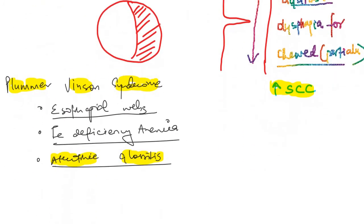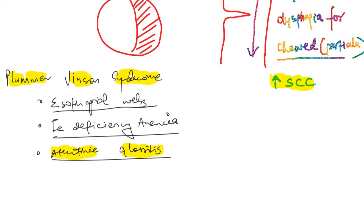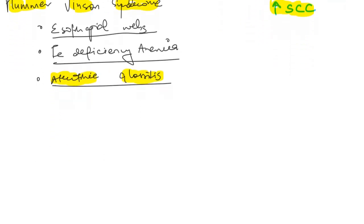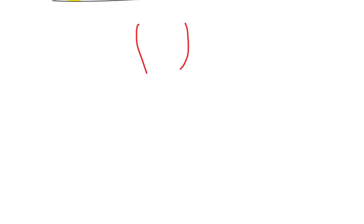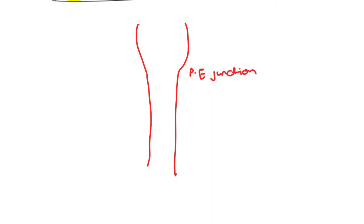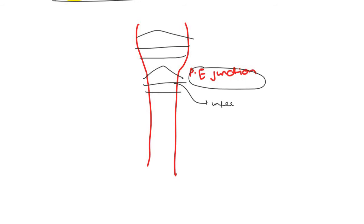The next esophageal pathology is Zenker's diverticulum. Imagine the pharynx above and the esophagus below at the pharyngoesophageal junction. In the pharynx there are pharyngeal constrictors: superior, middle, and inferior. We will focus on the inferior pharyngeal constrictor.